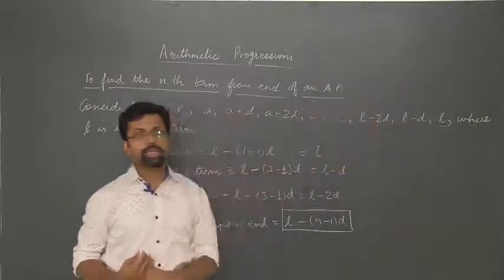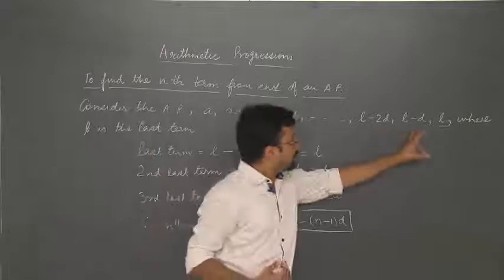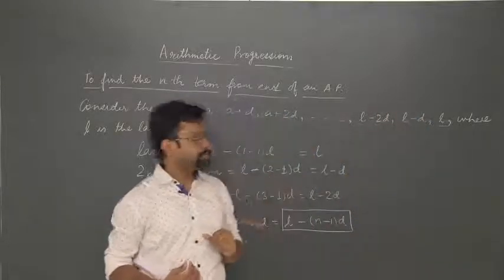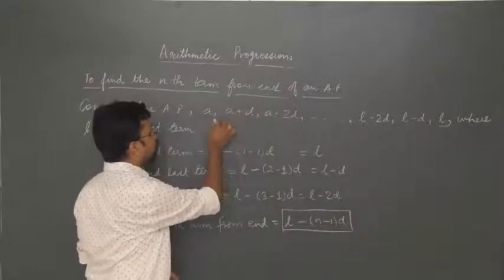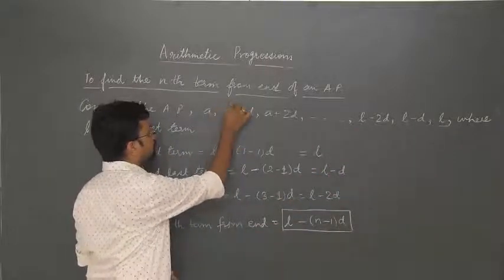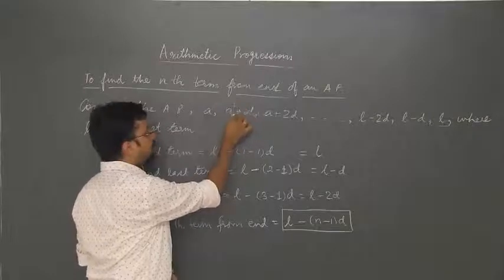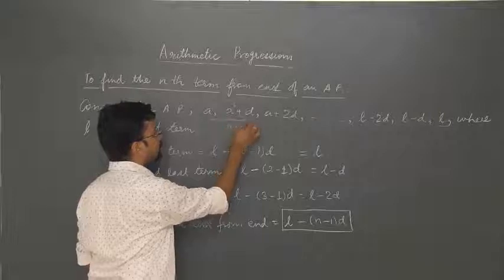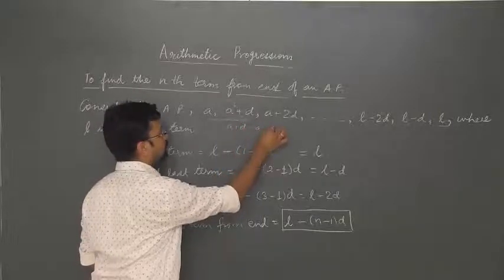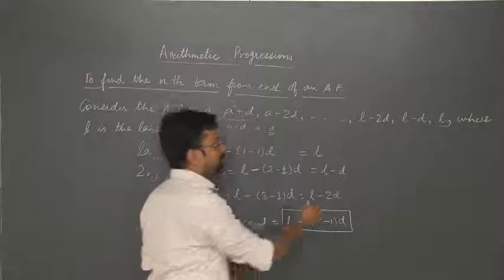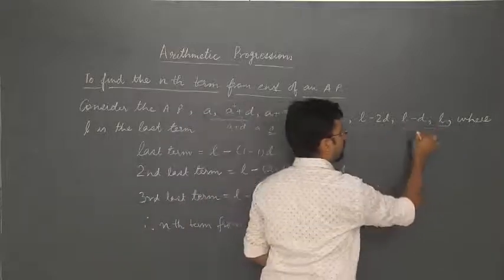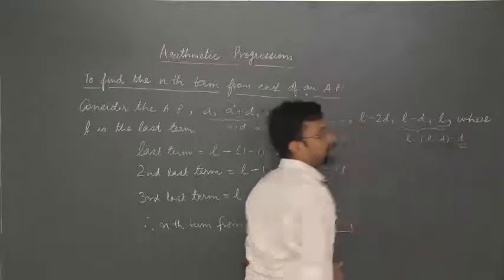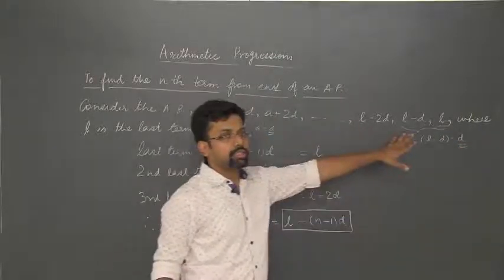The second last term will be L minus D minus D, because the difference has to be D. We have plus when going to the right, so every subsequent term minus the preceding term should equal D. Here, A plus D minus A equals D, so D is the common difference. Similarly, L minus (L minus D) gives you D, so the common difference has to be D. The last term is L.